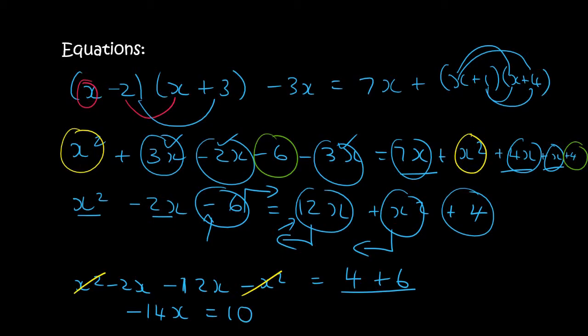To get x by itself, divide both sides by minus 14 so it cancels. Just type this into your calculator to simplify it, and you'll end up with x equals minus 5 over 7.